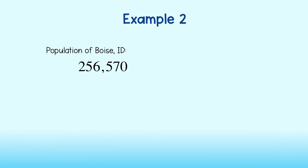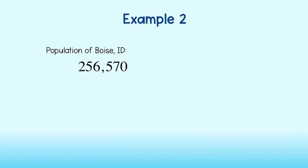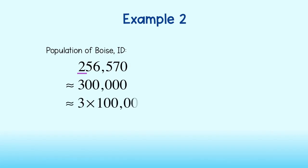Now, let's see if we can estimate the population of Boise, Idaho using a single digit number times a power of 10. Since we are working in the 100,000s, let's round to the nearest 100,000. Since there is a 5 to the right, we round up to 300,000. We can rewrite this as 3 times 100,000, or written using a power of 10, 3 times 10 to the fifth power.